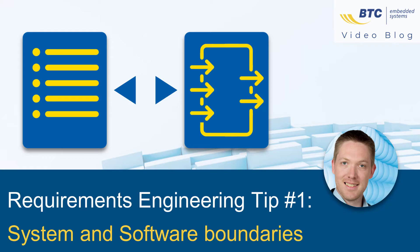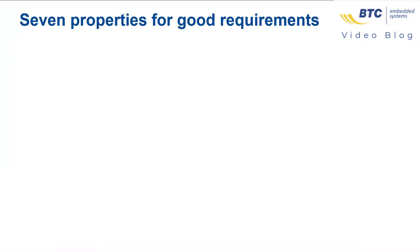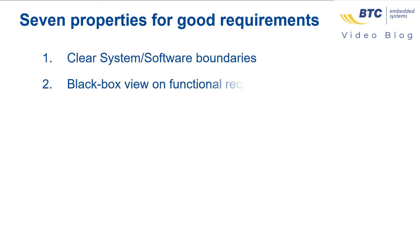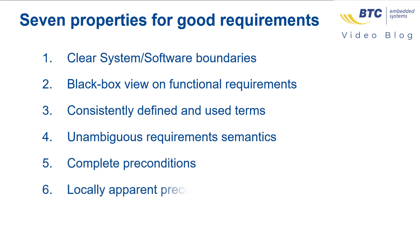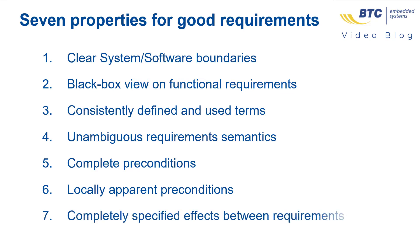Bad requirements are one of the main reasons why projects exceed time and budget. In this video blog series I will show you seven properties for good requirements: clear system software boundaries, black box view on functional requirements, consistently defined and used terms, unambiguous requirement semantics, complete preconditions, locally apparent preconditions, and completely specified effects between requirements. My name is Wolfgang Meinke from BTC Embedded Systems in Stuttgart, Germany, and I welcome you to this Requirements Engineering Tip 1.